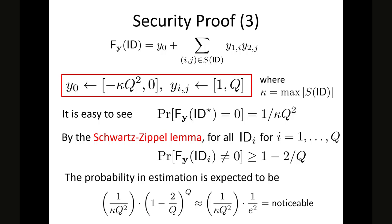We choose y_0 and y_{ij} specifically, where kappa is the maximum size of S(ID). The probability that f_y(ID*) = 0 can be estimated directly. By the Schwartz-Zippel lemma, for all queried identities ID_i the second equation holds. So the probability can be estimated to be noticeable. Of course, this analysis is informal because these events are not independent, but it gives intuition for why our partitioning technique works.